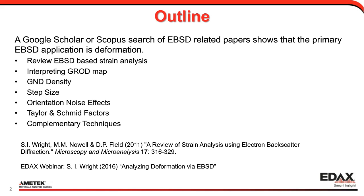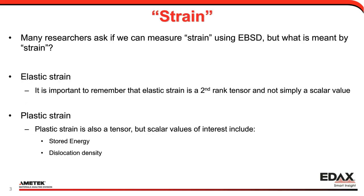I often get asked if we can measure strain using EBSD, but strain is a little bit of an ambiguous term — it can mean a lot of different things. I'll break it down into two parts: elastic strain, which is important to remember is a second-ranked tensor, not simply a scalar value; and plastic strain, which is also a tensor, but we also consider other scalar values of interest, things like stored energy and dislocation density.